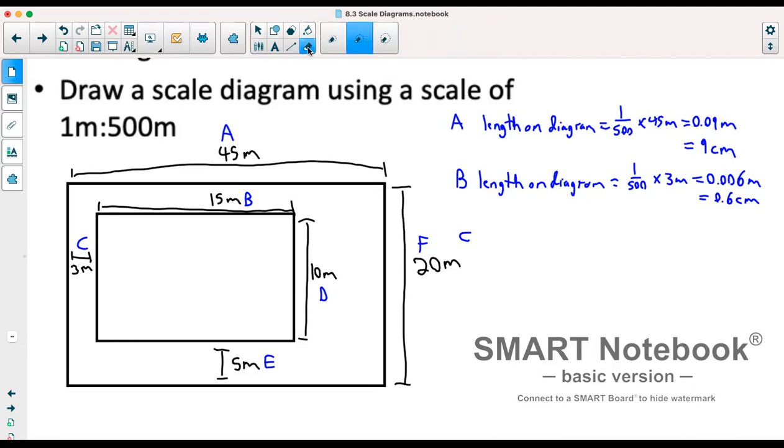I realized I just did my value for C there. So that's actually my C value because we took the three from there. We'll do B, which is at 15. So we've got 1 over 500 times 15 meters, which gives us 0.03 meters, which is three centimeters.